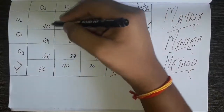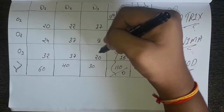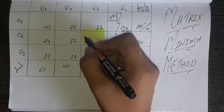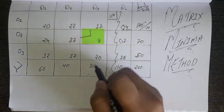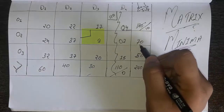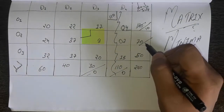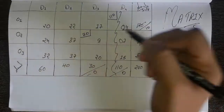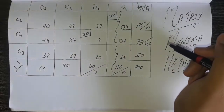Now we have 9 numbers remaining. Find the smallest among them. In this 3 by 3 matrix, the smallest is 9. Do the same thing — make a square box here. Check the demand and supply: the demand is 30. Subtract 70 minus 30. So 30 becomes 0 and 70 becomes 40. Write the difference here. 70 minus 30 becomes 40, and this 30 gets written here. Write the smallest number — just the same.